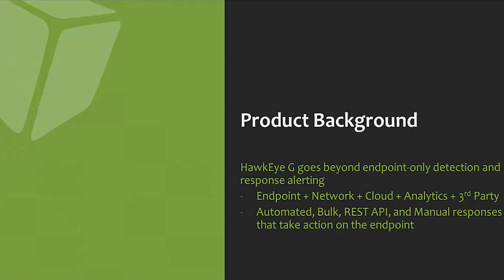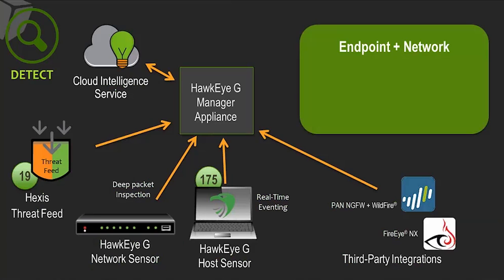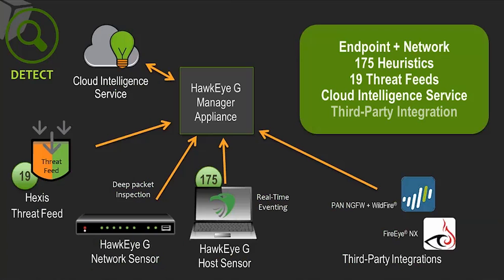From a manual action perspective, the operator or security analyst can click and go ahead and quarantine a file or kill a process. From a data flow standpoint, we bring in network indicators from our network sensor — our multi-gigabit deep packet inspection network sensor — and real-time eventing off of the host sensor, a lightweight host sensor for Windows and Linux platforms.